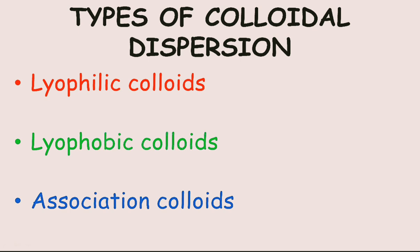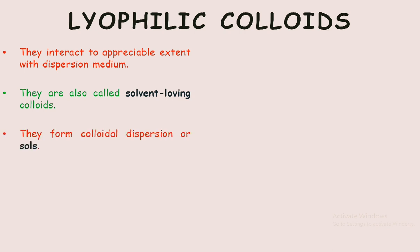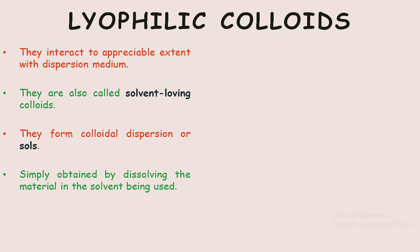The first type is lyophilic colloids. This system contains colloidal particles that interact to an appreciable extent with the dispersion medium. They are also known as solvent-loving colloids owing to their affinity for the dispersion medium. Such materials form colloidal dispersions or sols, and are usually obtained simply by dissolving the material in the solvent being used.